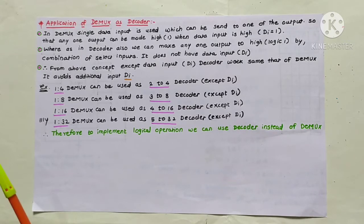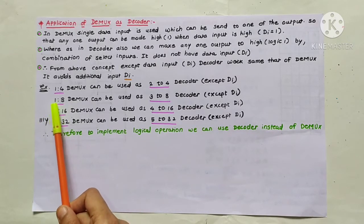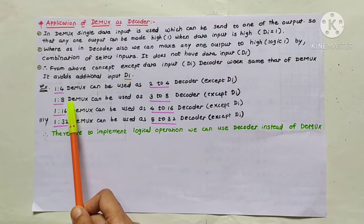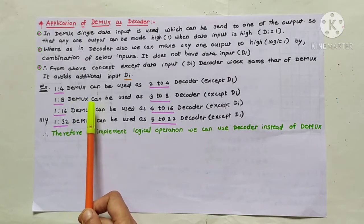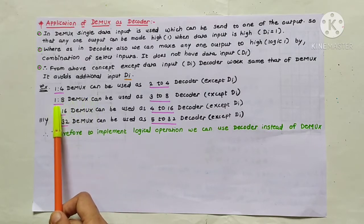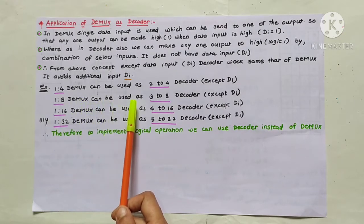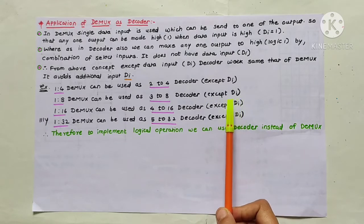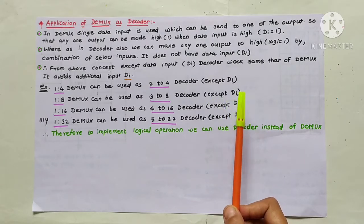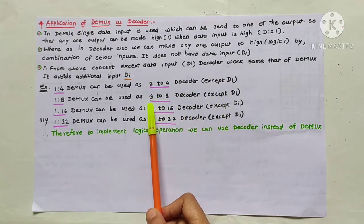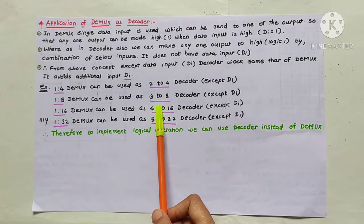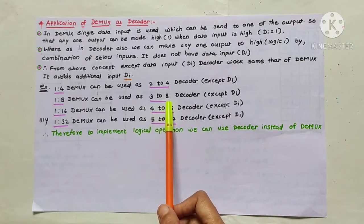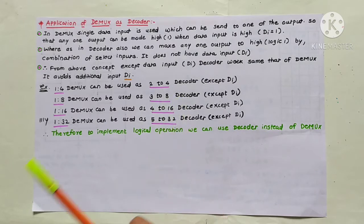A 1-to-8 demultiplexer requires three select lines. Therefore, a 1-to-8 demultiplexer can be used as a 3-to-8 decoder, except for data input DI. This decoder uses 3-bit BCD coded information and that is given in the form of a 3-to-8 decoder.